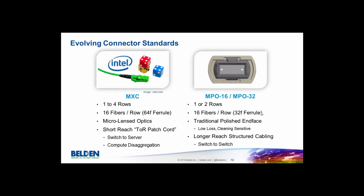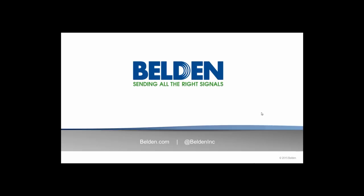The other connector is the MPO 16/32, which is emerging to address future-generation protocols — optimizing 100G SR4 and 400G and beyond. We're looking at one or two rows of 16 fibers per row. These use traditional polished end faces, very much like the MPO world today, but they are cleaning-sensitive. However, we can get very low loss connections, enabling longer reach, high point-count topologies, zone distribution, cross-connects, optical shuffles, and switch-to-switch runs of 10 to 100 meters.